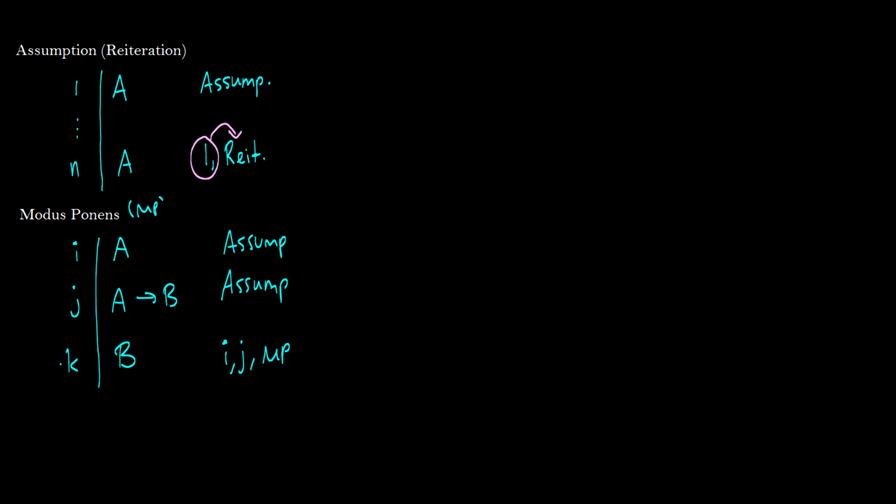is from line I and line J. And this is MP for modus ponens. Now when I say line I and line J, I just mean any line. If it's a two and a four there, you just put two, four, MP.